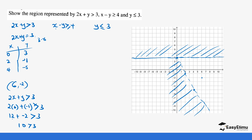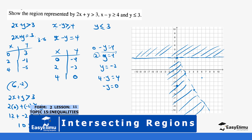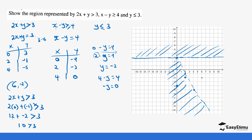Next, we look at x minus y is greater than or equal to 4, treating it as x minus y equals 4. When x is 0, y is negative 4. When x is 2, y is negative 2. When x is 4, y is 0. Since there is an equal sign, the line is bold. We plot the points (0, -4), (2, -2), and (4, 0) and join them.